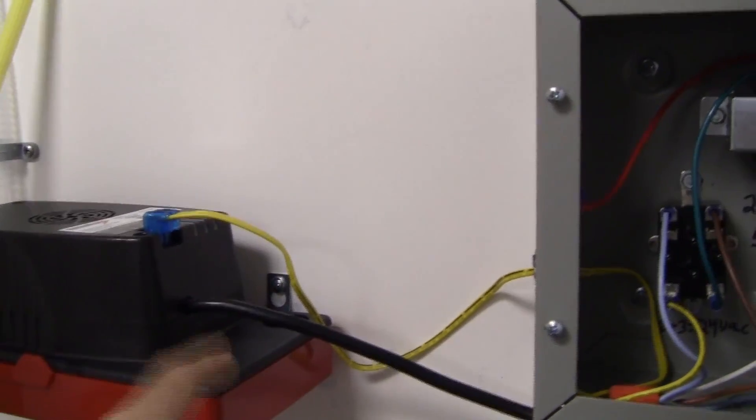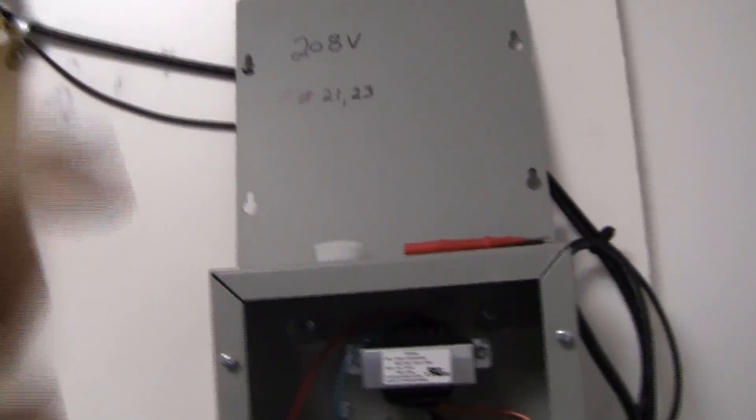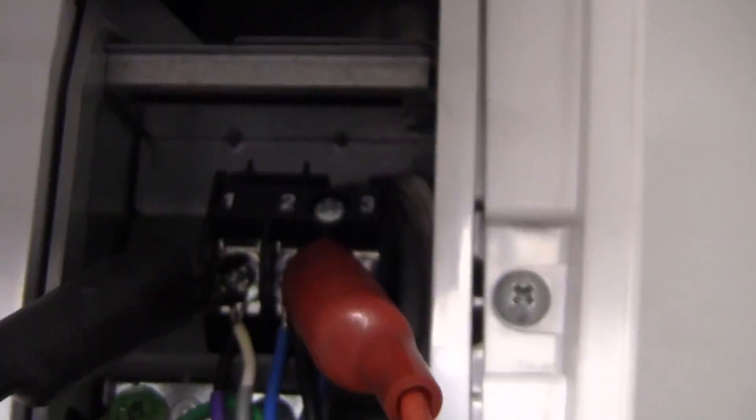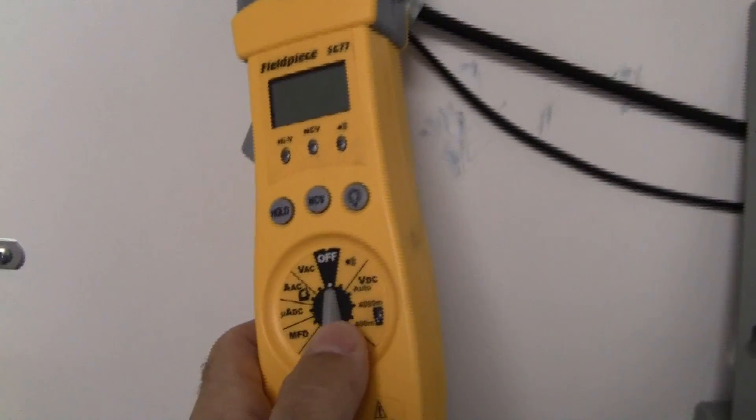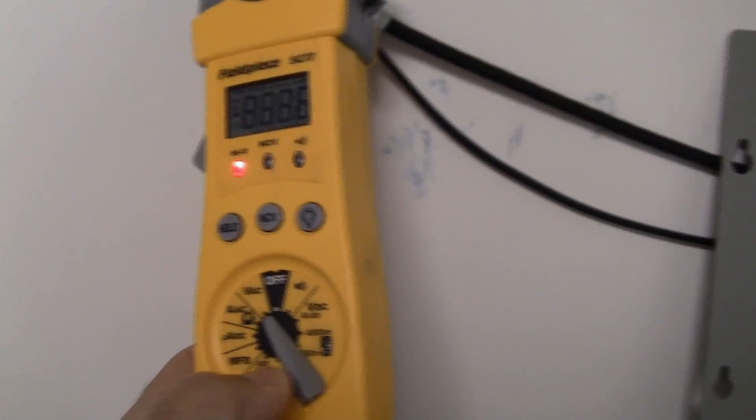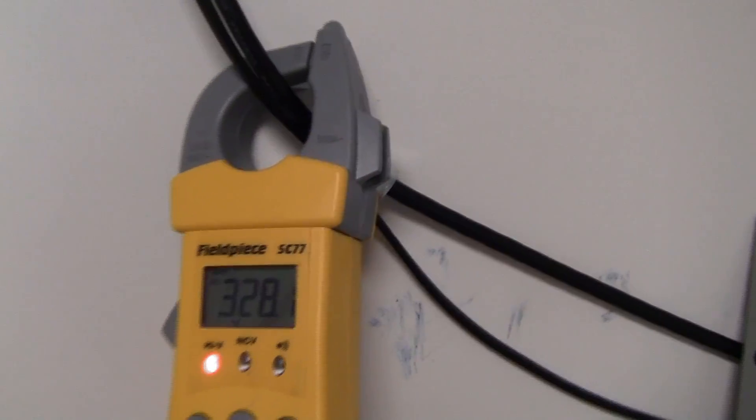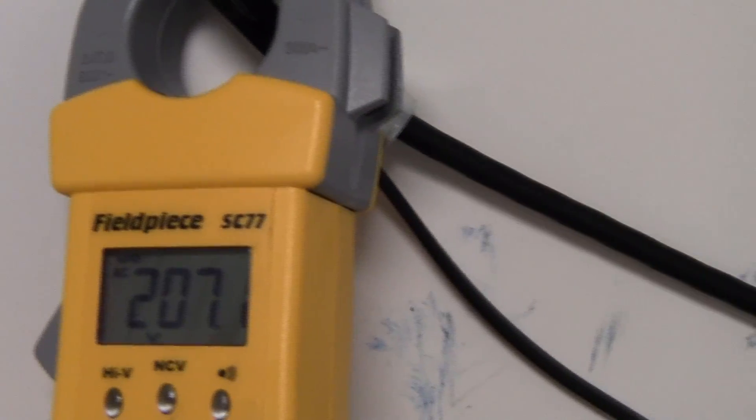I got the breaker on there's an LED light right there telling you that I got the power on to the evaporator and I put on my Fieldpiece leads on lines one and two. I'm going to turn the meter on voltage AC and you'll see that we have 207 volts.